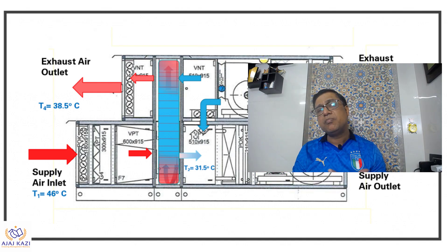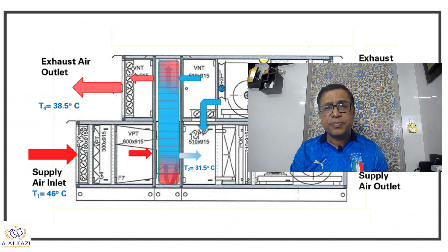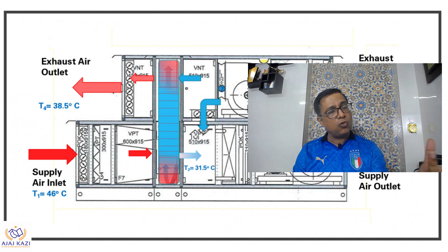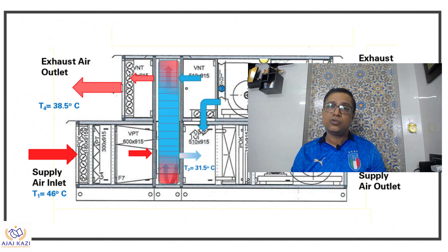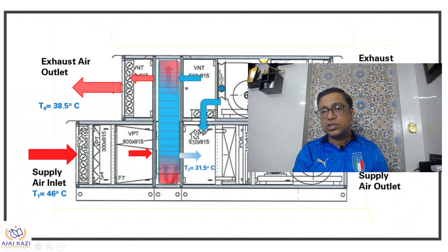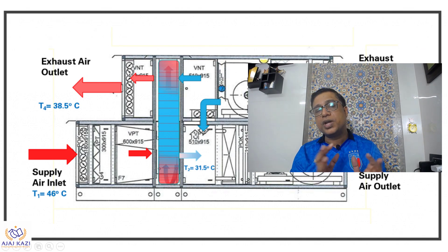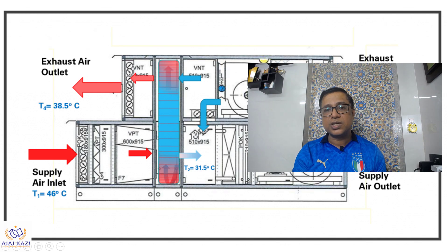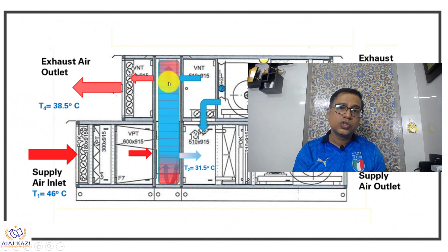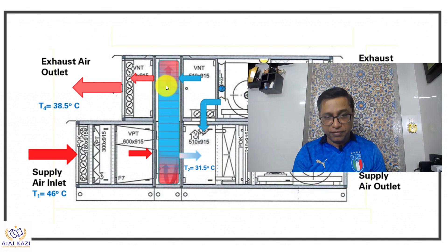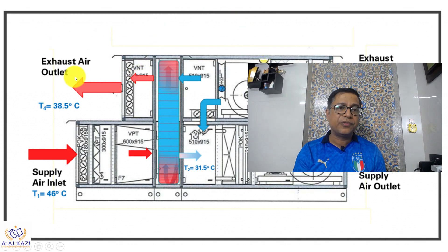This is the exhaust. What we do in HRU is this exhaust air is picked up by one unit, one fan, and it goes over this wheel — that is called the heat recovery wheel. Once this air passes through it, it is then exhausted out.